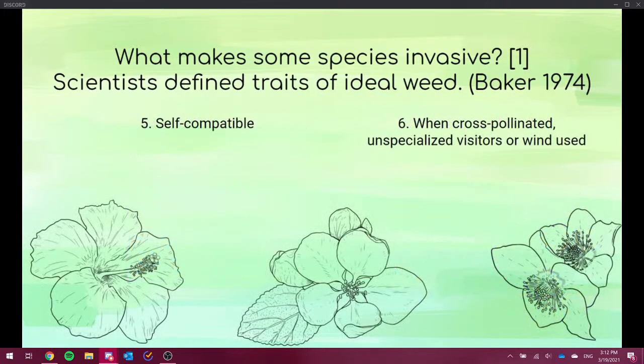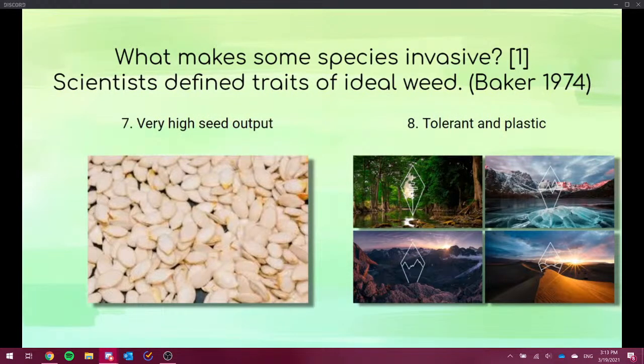Continuous seed production, again, for me, pretty self-explanatory, because the more seeds, the greater the chances for germinate and to colonize a new area. Then we have self-compatible. That means that a plant can be fertilized by another flower on the same plant.